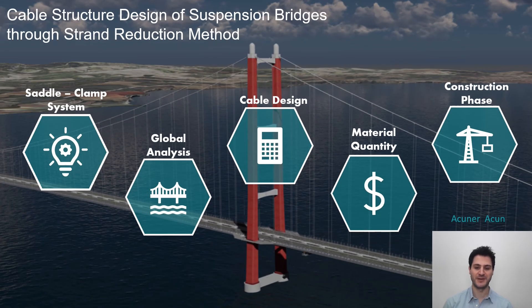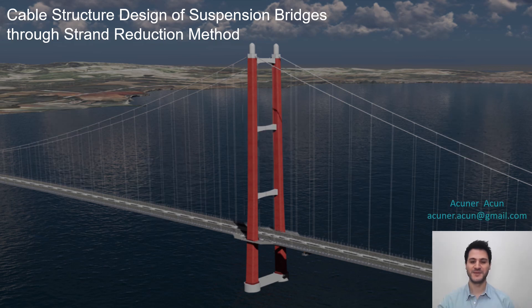In summary, strand reduction method is introduced and compared with the current design of 1915 Çanakkale bridge. It was explained how design loads are obtained and how revised elements are verified. It was underlined that significant cost savings can be achieved. Finally, construction phase was briefly explained. This concludes my presentation, so let's move on to final comments.